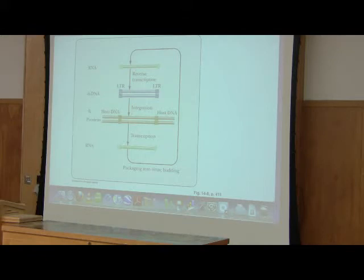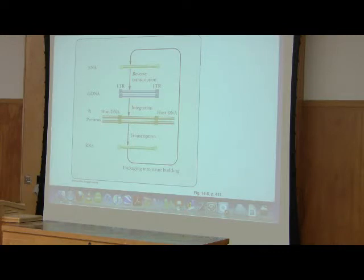When it inserts into the genome of the host, that means the host now has HIV DNA in its chromosomes. It inserts, as best we can tell, randomly. If it always went in the same place, we might be able to target and get it out. It doesn't do that — it inserts relatively randomly.